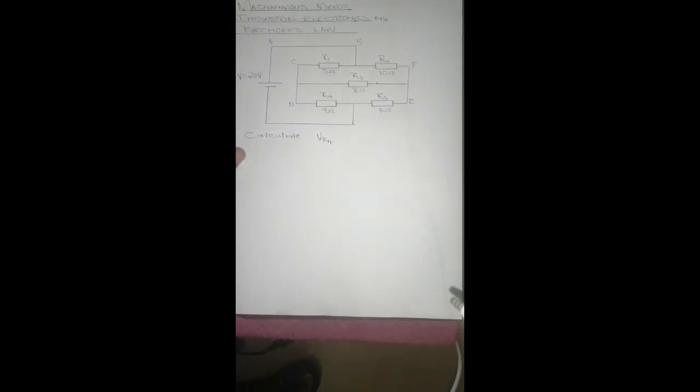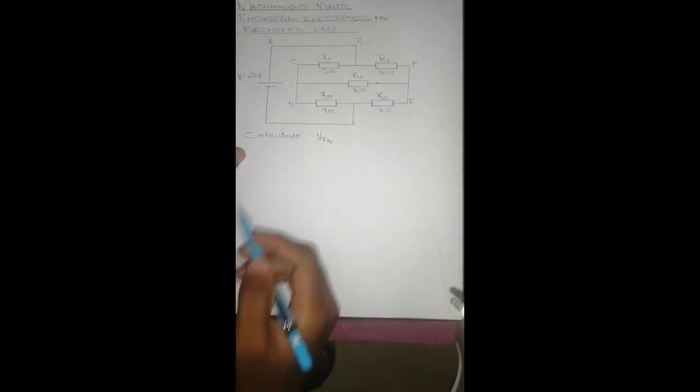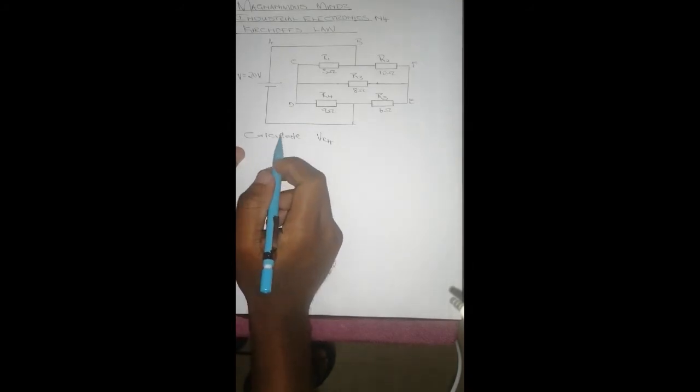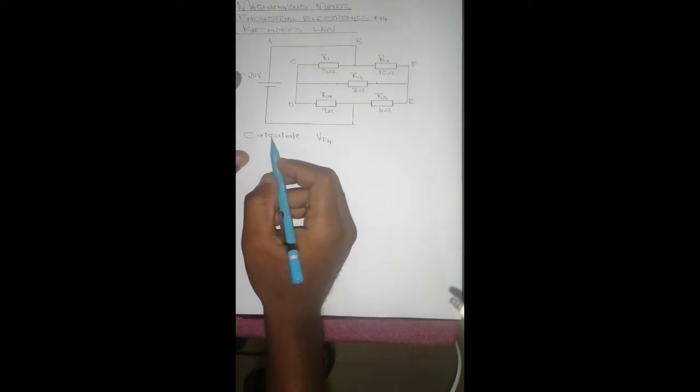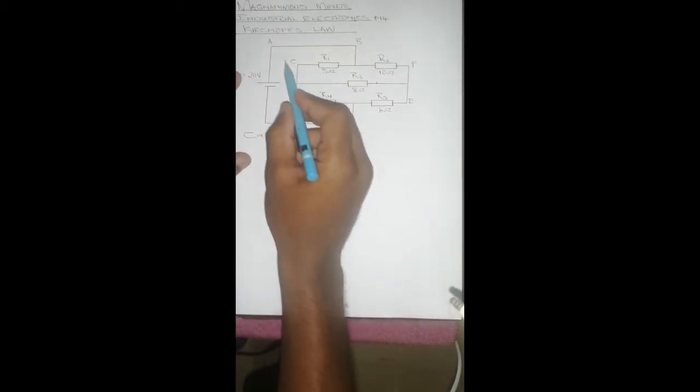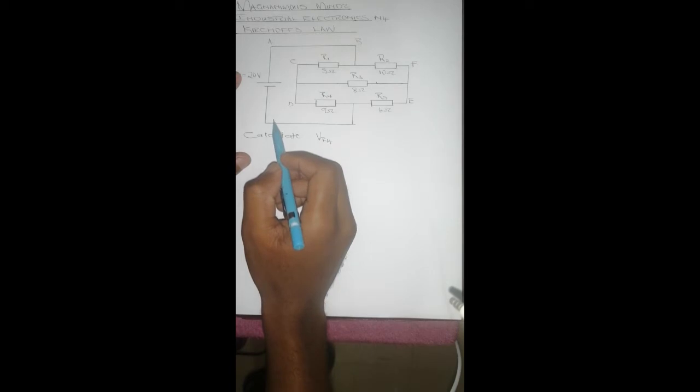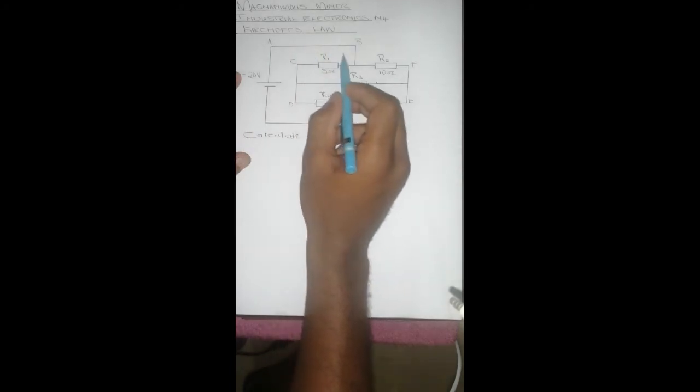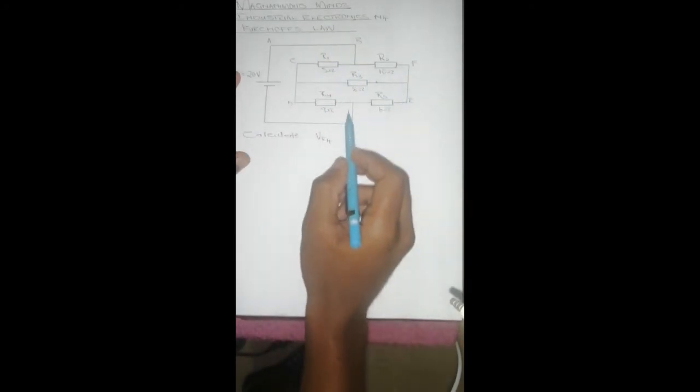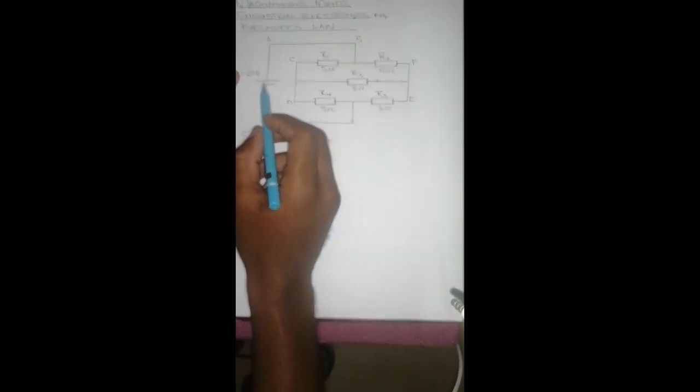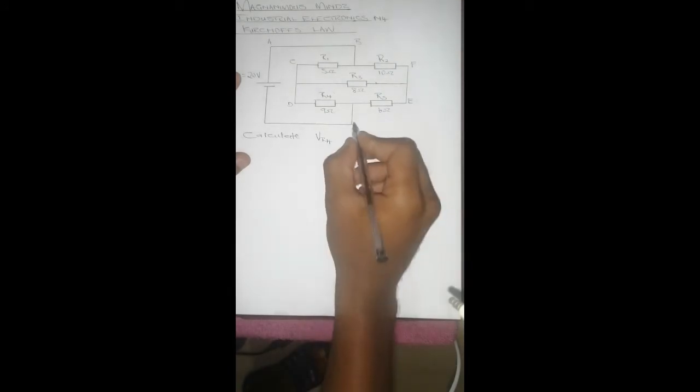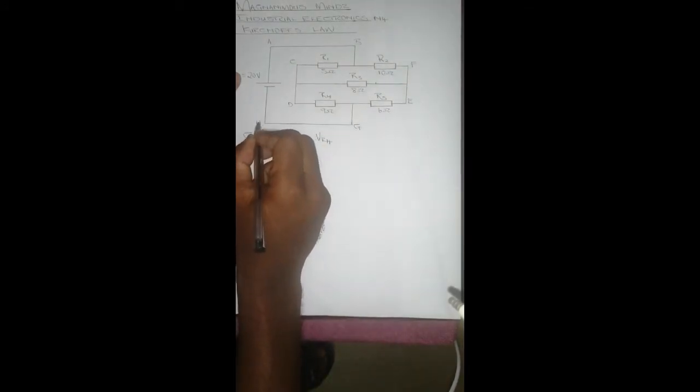Know that according to Kirchhoff's Voltage Law, it says that the EMF equals the voltage drop across the loop. So that means considering this loop, this EMF equals the voltage across these two resistors. So using that we have to first determine where our current is going.